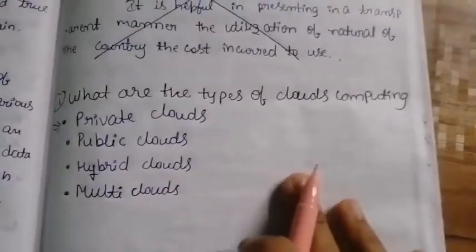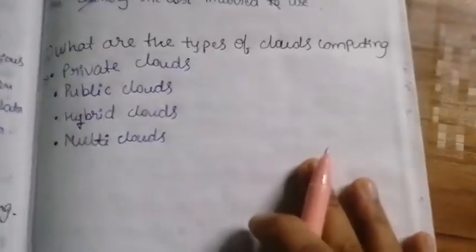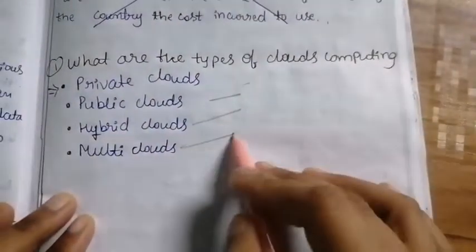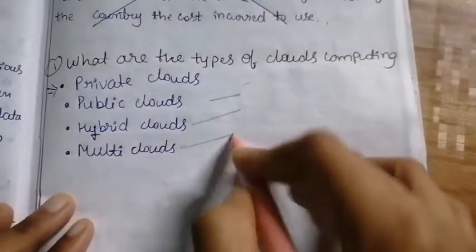What are the types of cloud computing? The four types are: private cloud, public cloud, hybrid cloud, and multiple cloud.